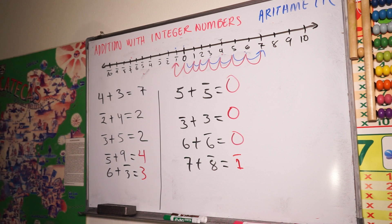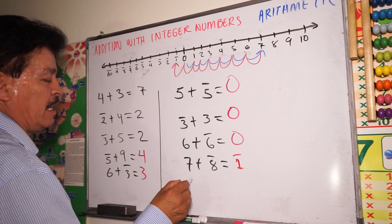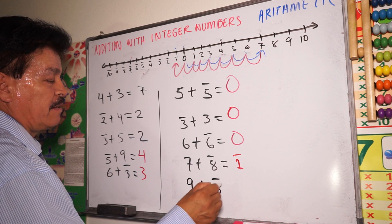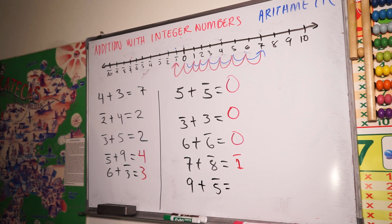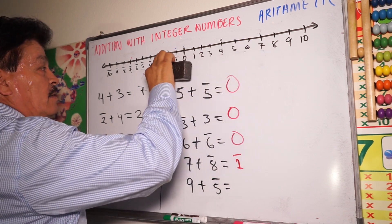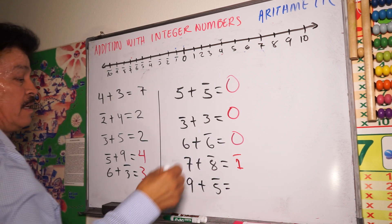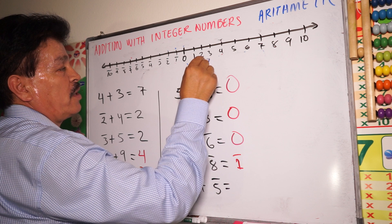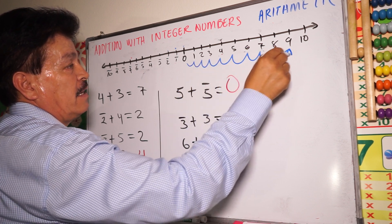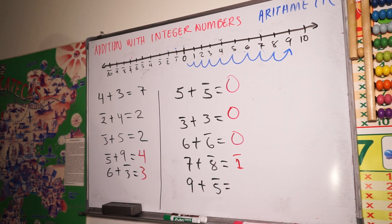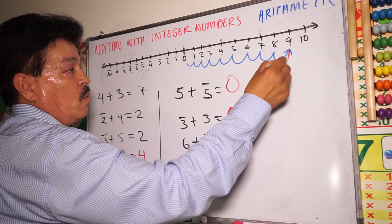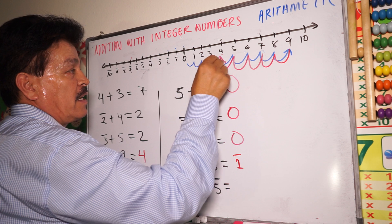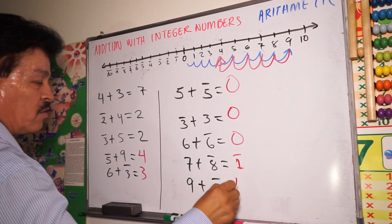Let's do one more problem. Nine plus minus five. Use the number line — one, two, three, four, five, six, seven, eight, nine. Then plus negative five — one, two, three, four, five. Right here. This equals four, right?